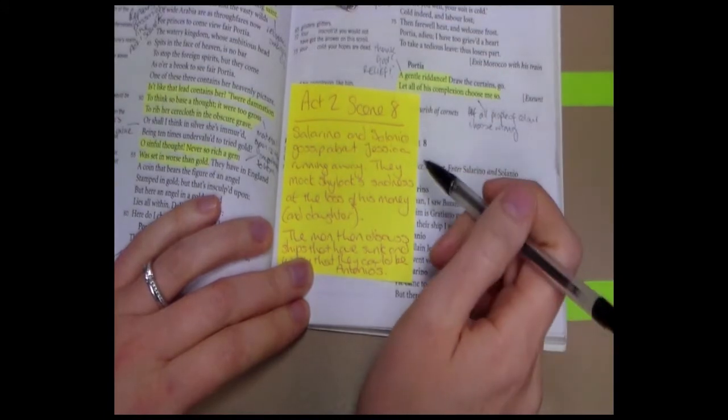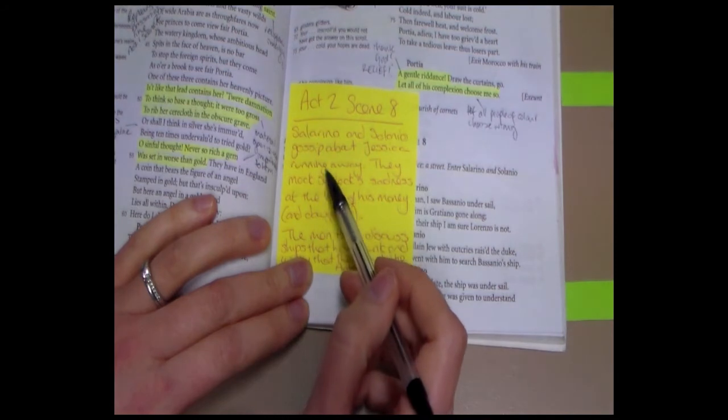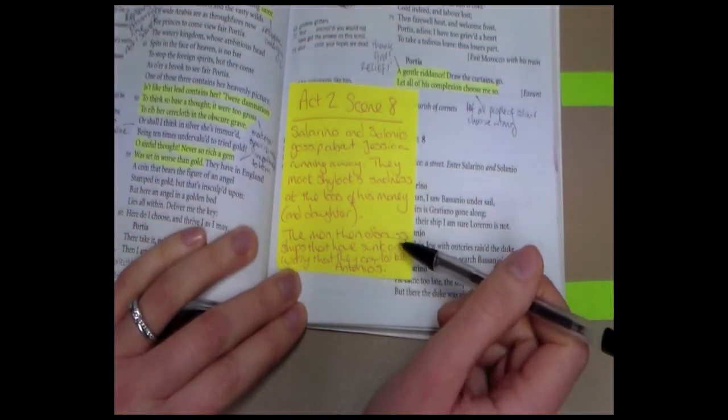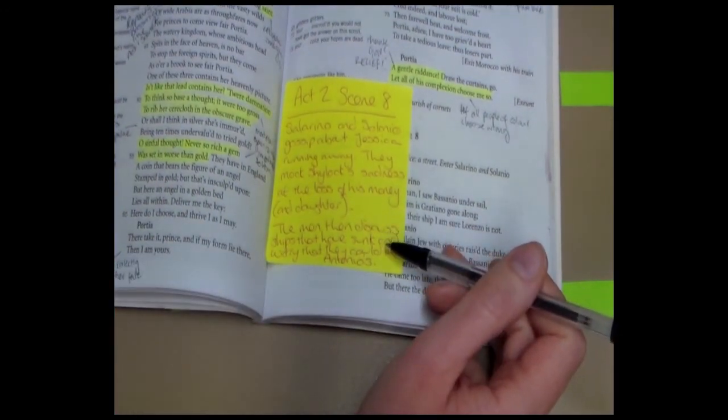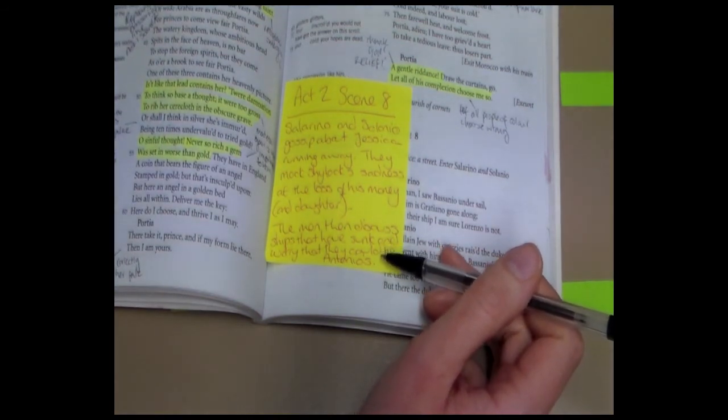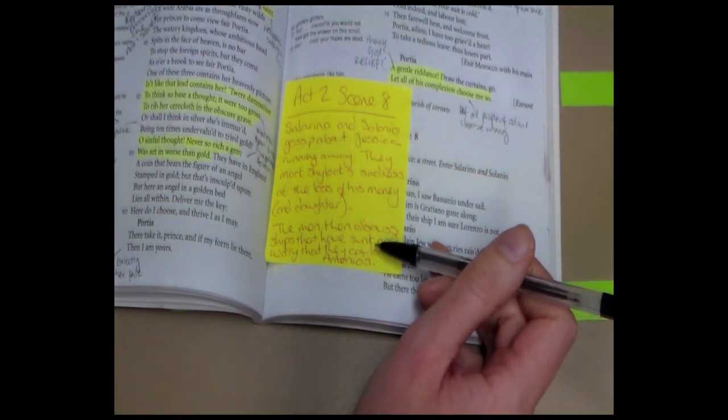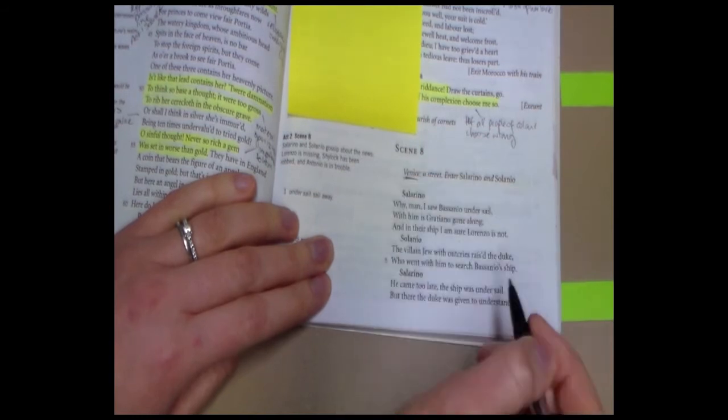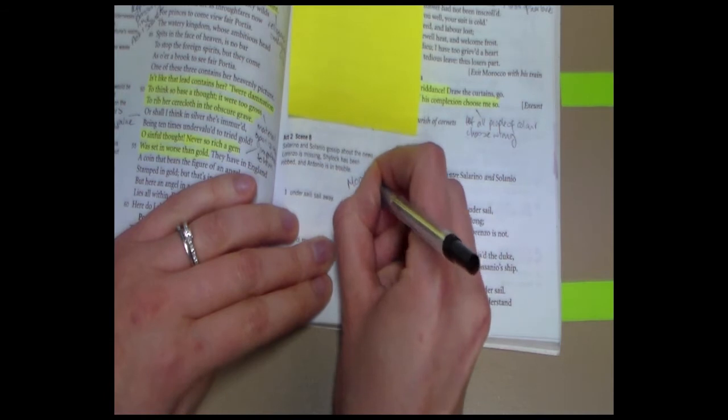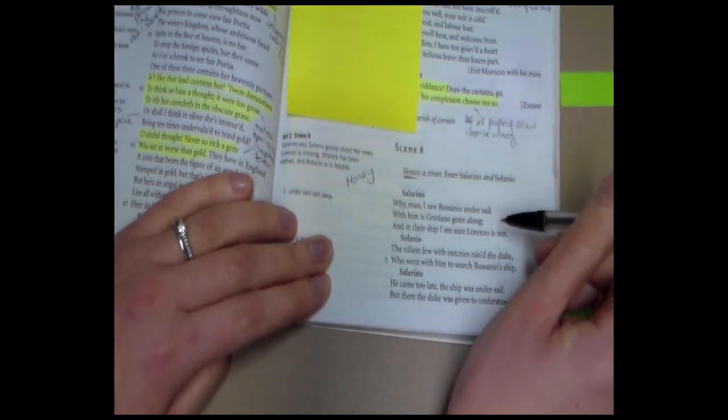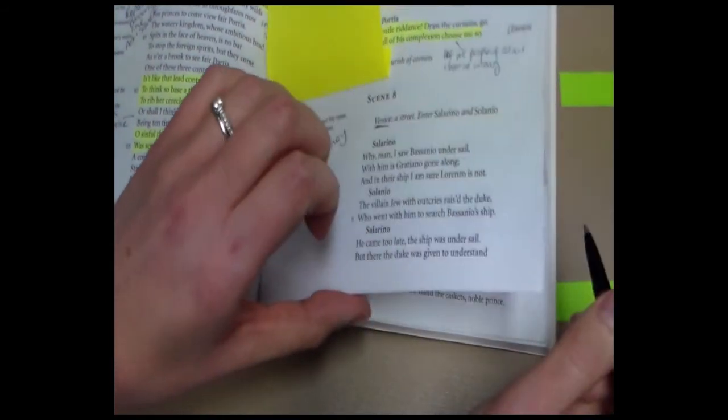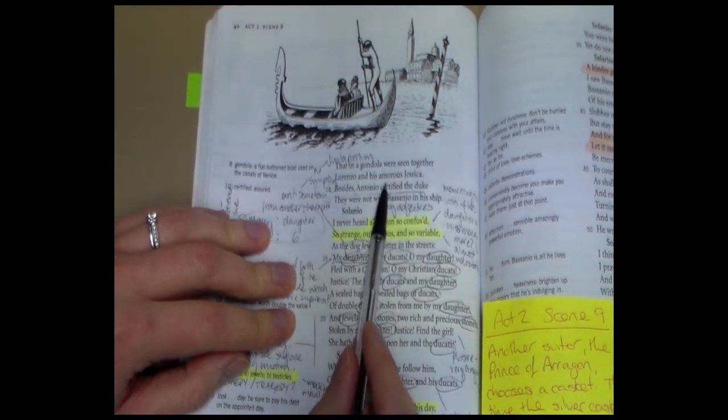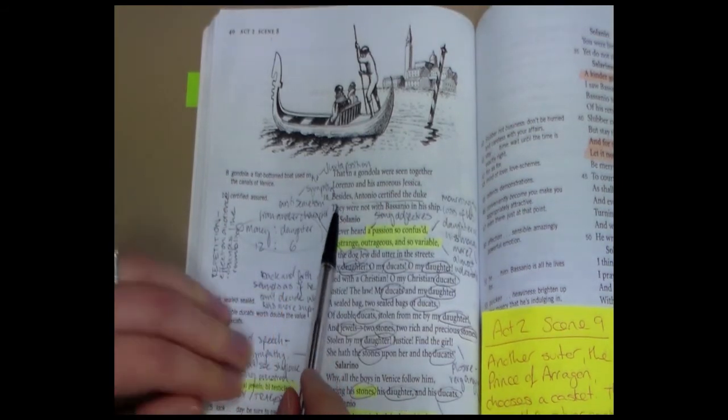Now, Act 2, Scene 8, we return to Venice, and Salarino and Solanio gossip about Jessica running away. They then mock Shylock's sadness at the loss of his money and of his daughter, and the two men then discuss ships that they have heard have sunk, and they worry that these could be Antonio's. Everything in this scene is gossip amongst these two men, and we must remember that it's those two speaking, and that we don't have direct speech from other characters. So like we said, we're back in Venice, so we know this is going to be a discussion about money.